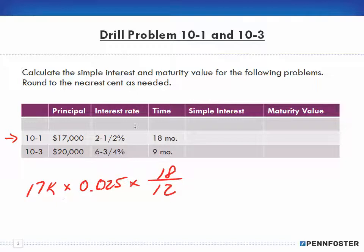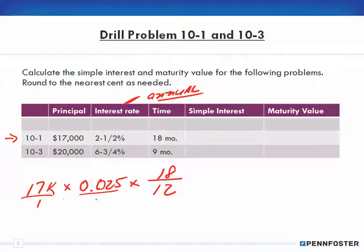Remember, the interest rate here is an annual interest rate, and you want to keep things in the same time frames. That's why I'm dividing by 12 — there are 12 months in a year. Now it's just a matter of doing the math. Since 17,000 and 0.025 are each over one, I multiply across the numerators and divide by the denominator.